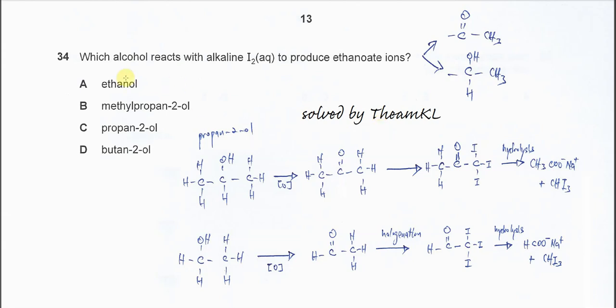Question 34: Which alcohol reacts with alkaline iodine to produce ethanoid ion? First we need to find out the alcohol that can form methyl ketone. We know that alkaline iodine is a mild oxidizing agent, and it's able to oxidize alcohol to form the ketone.